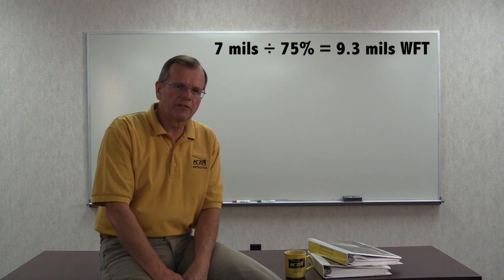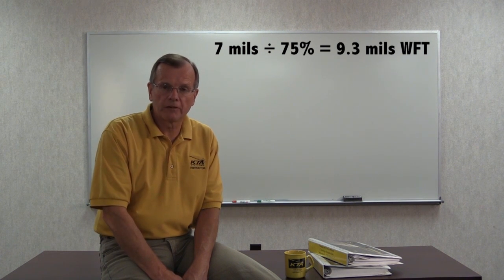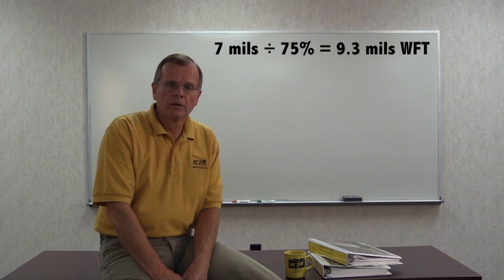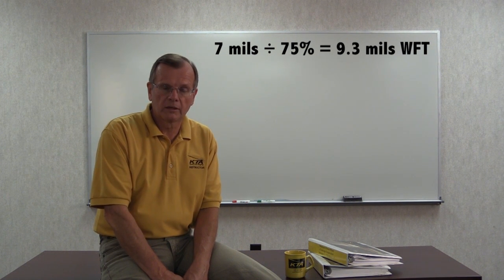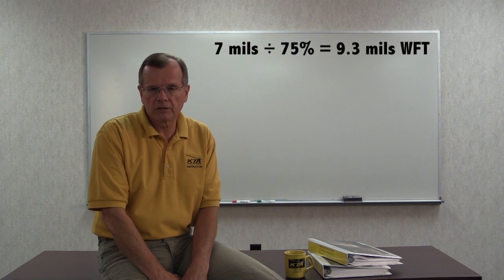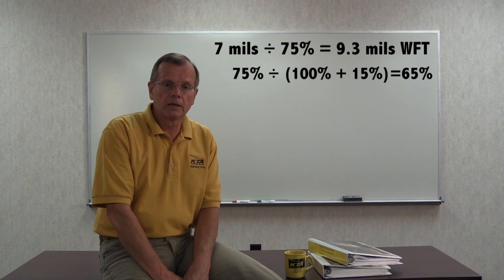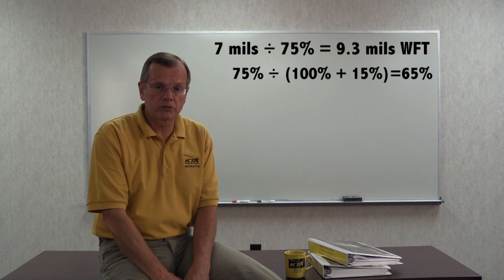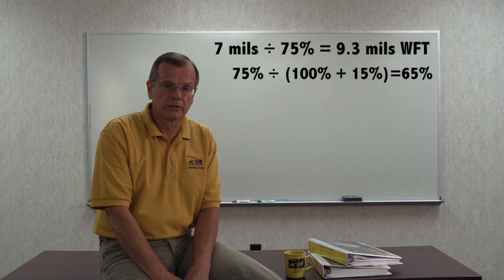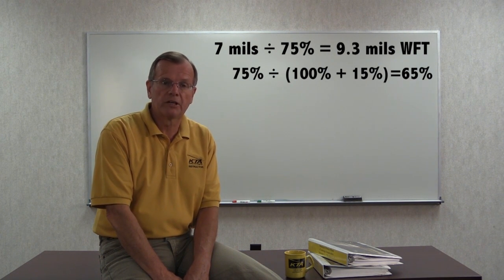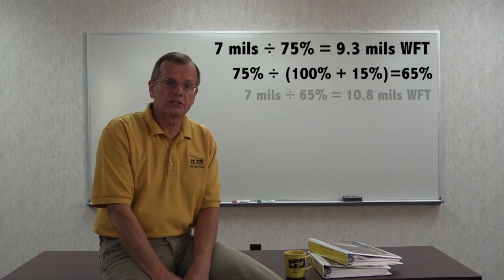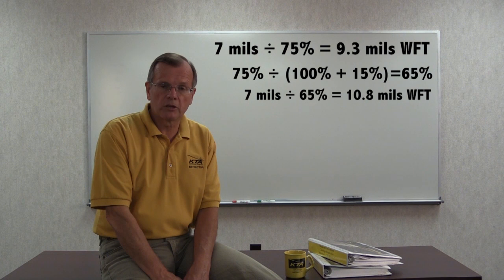For example, assume we want to apply 7 mils of coating and there's 75% solids by volume in the can — no thinning. In this case, 7 mils divided by 75% solids equals 9.3 mils wet. Now assume we thin that paint by 15%. We first figure out the new solids by volume: 75% divided by 115% calculates to new solids by volume after thinning of 65%. Then 7 mils divided by the new solids of 65% gives us 10.8 mils wet film thickness.